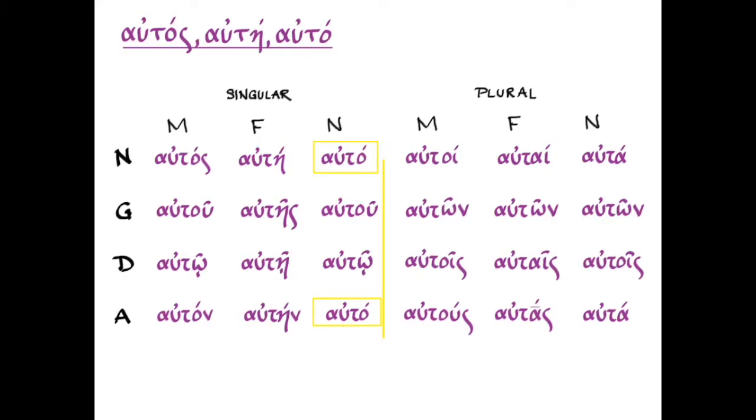Now, the way that we form autos is not confusing at all. But the way that we translate it has a little bit more for us to learn because there are three different translations. And those translations depend on whether the word is in attributive position or predicate position and whether it's standing alone or is agreeing with something in the sentence.